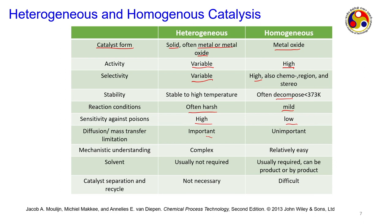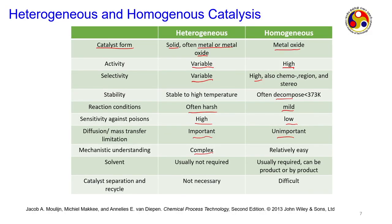Mass transfer is important in heterogeneous because you have different phases - products forming in liquid phase must diffuse through the interphase to the gas phase, creating mass transfer resistance. In homogeneous it is unimportant because the entire reaction is carried out in a single phase with no diffusion between phases. Mechanistic understanding is complex in heterogeneous due to several types of pores, carrier materials, supports, and channel orientations; it is very easy in homogeneous because similar active sites allow easy production of desired compounds.